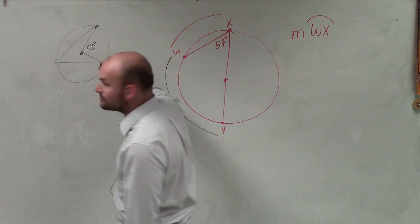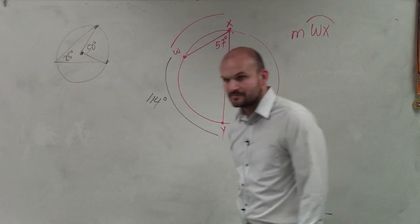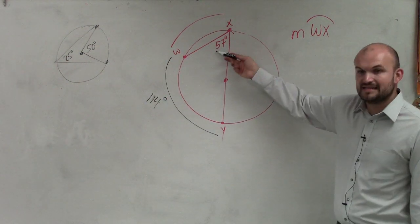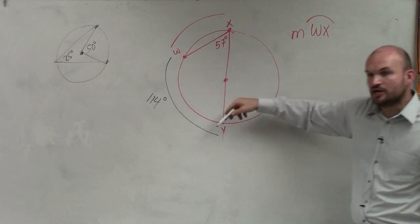But if I did this, which is an inscribed angle that's 25 degrees, correct? So if that's 57 degrees, I can now say that the measurement from your arc is 114 degrees.